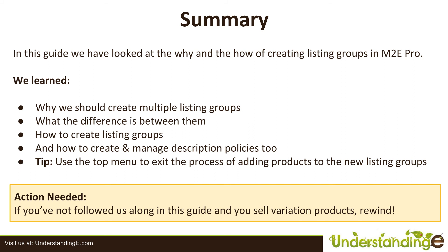In this guide we've seen how to create listing groups in M2E Pro and why they're important. We've learned why we should create multiple listing groups: it helps you manage the different listing types based upon variations in M2E Pro, and it helps you manage large numbers of listings on eBay by separating them into individual groups. We've shown you the differences between them, how to create listing groups, and we had a quick tangent about why they are called 'listings' in M2E Pro when we feel they should be called something else. We also created and managed description policies while creating a listing group.